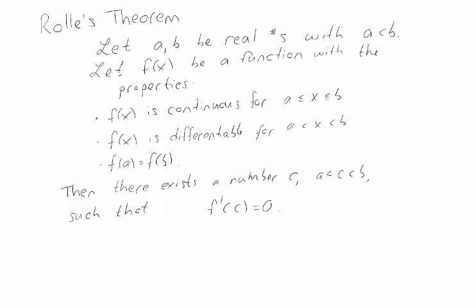Rolle's Theorem is about guaranteeing the existence of a critical point. Here's the setup: you have two x values, a and b, where a is the smaller one. We have a function such that f(a) and f(b) are the same. The goal is to guarantee that there's some critical point between them.